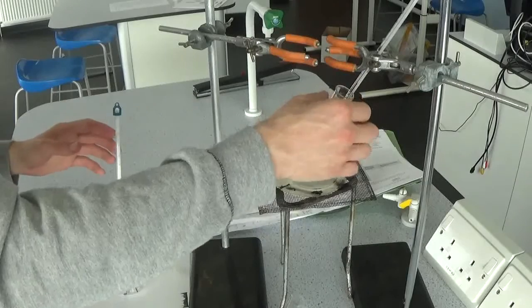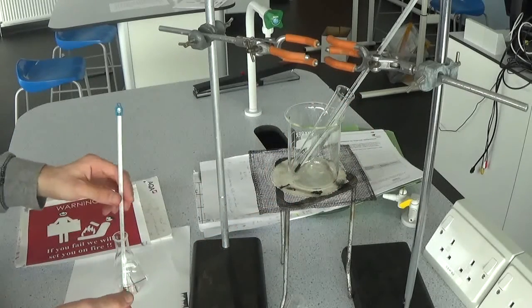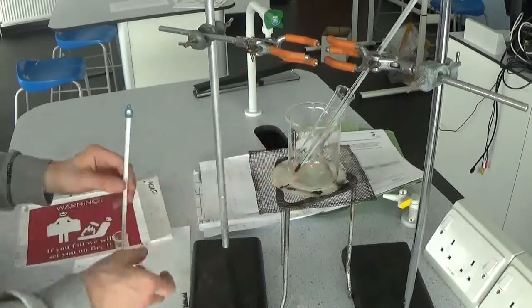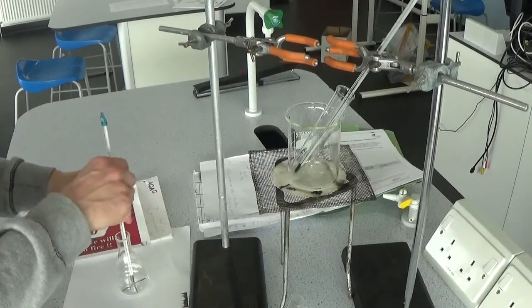I would then take my 10 cubic centimeters of the sodium thiosulfate. I would have a stopwatch or stop clock ready and I would pour that 10 cubic centimeters into there and start mixing.